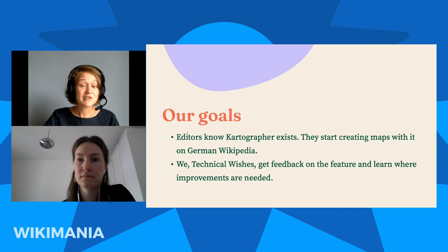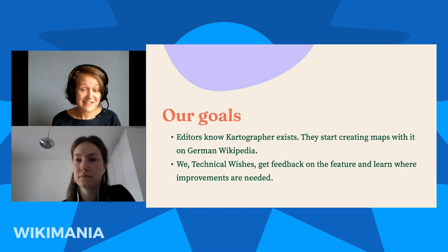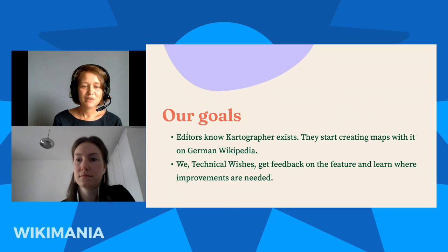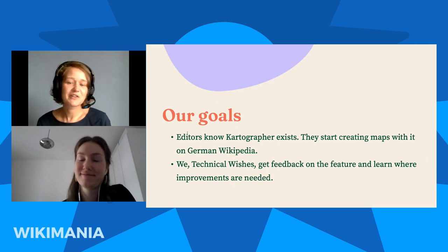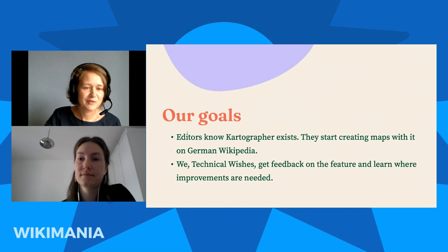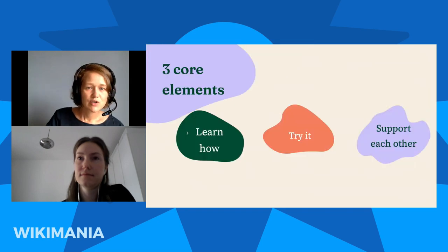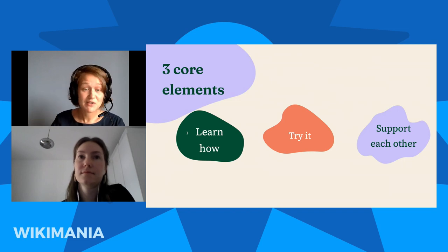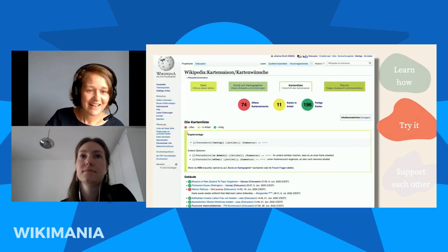Ideally in this space, if you participated you would see the cool maps others made and get inspired, show off the cool maps you made, and gather with people interested in Kartographer — maybe find someone who struggled like you or has overcome struggles who might help when you run into a problem. We planned this campaign and set two main goals: first, we wanted people to know Kartographer exists on their wiki and not just be drowned in the flood of information. Second, we wanted people to actually start using it and creating maps, and also to hear feedback on what's working and what improvements are needed.